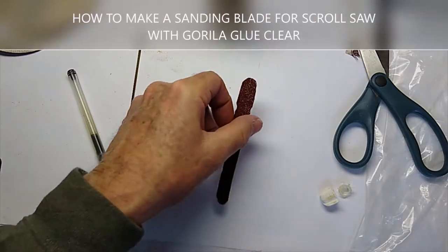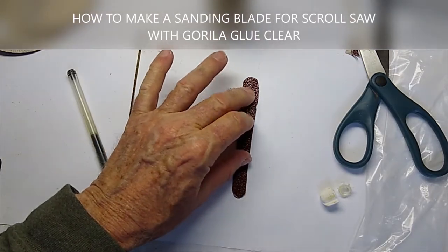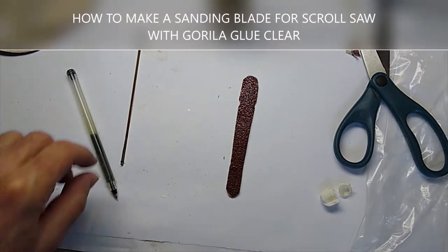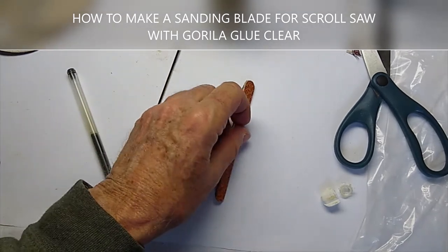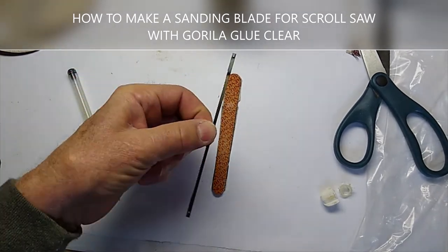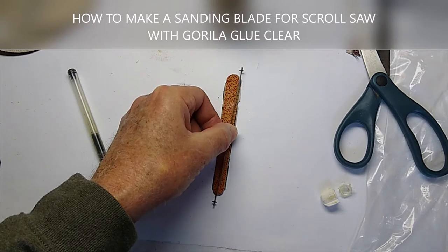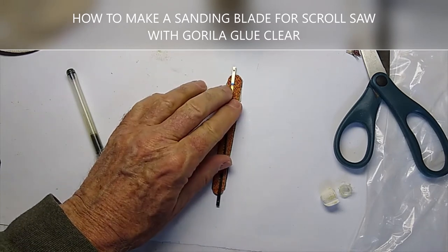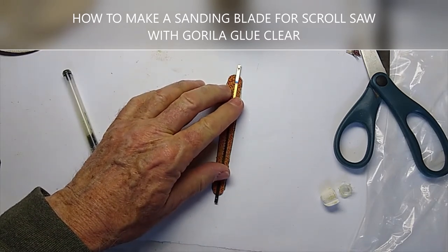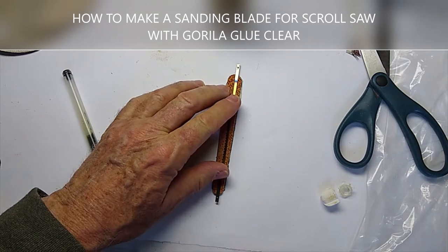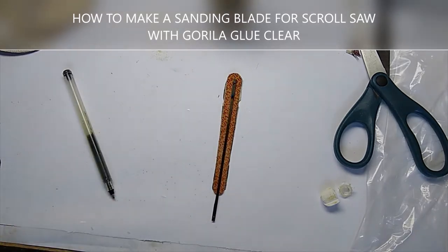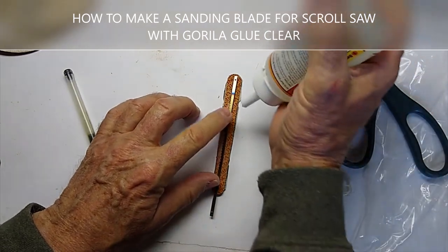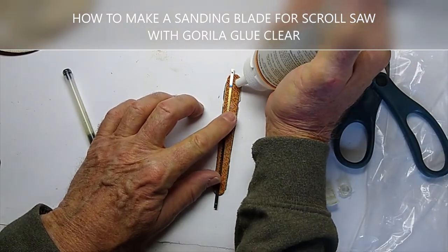Glue that sandpaper onto the fingernail file and now all we need to do is put a little blade on there. And so just lay the blade like that on there and start putting glue on.